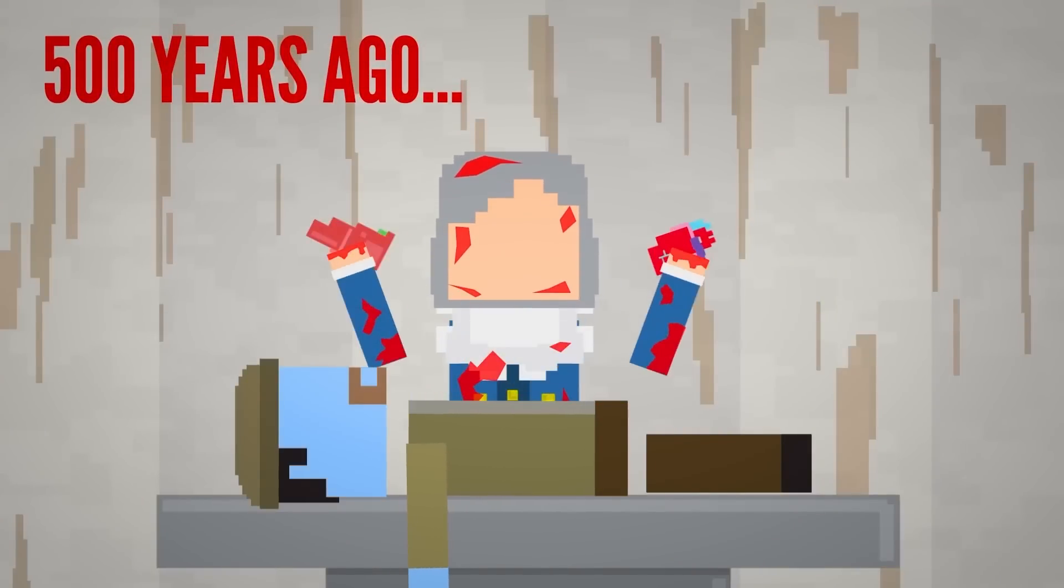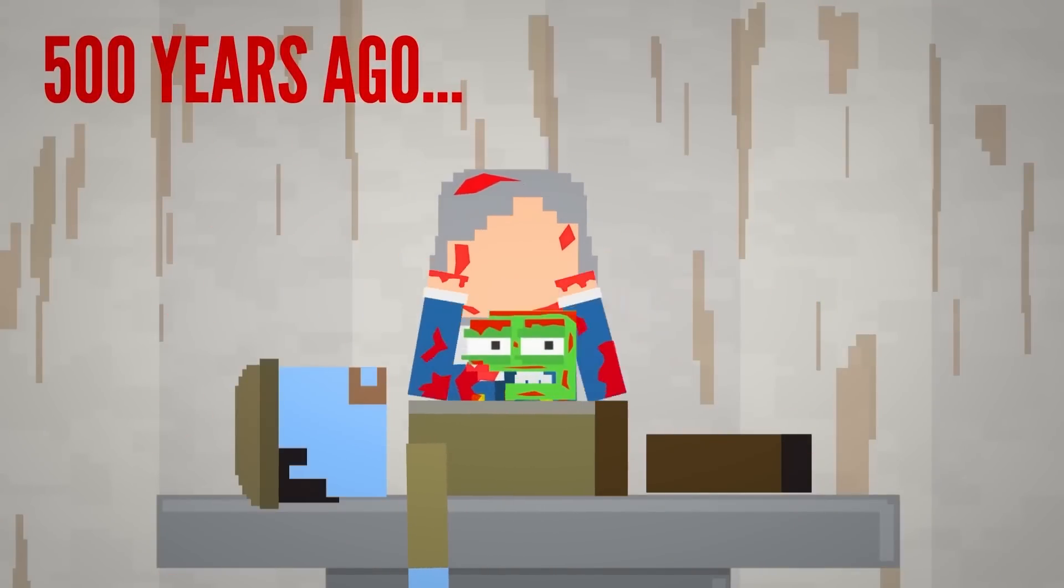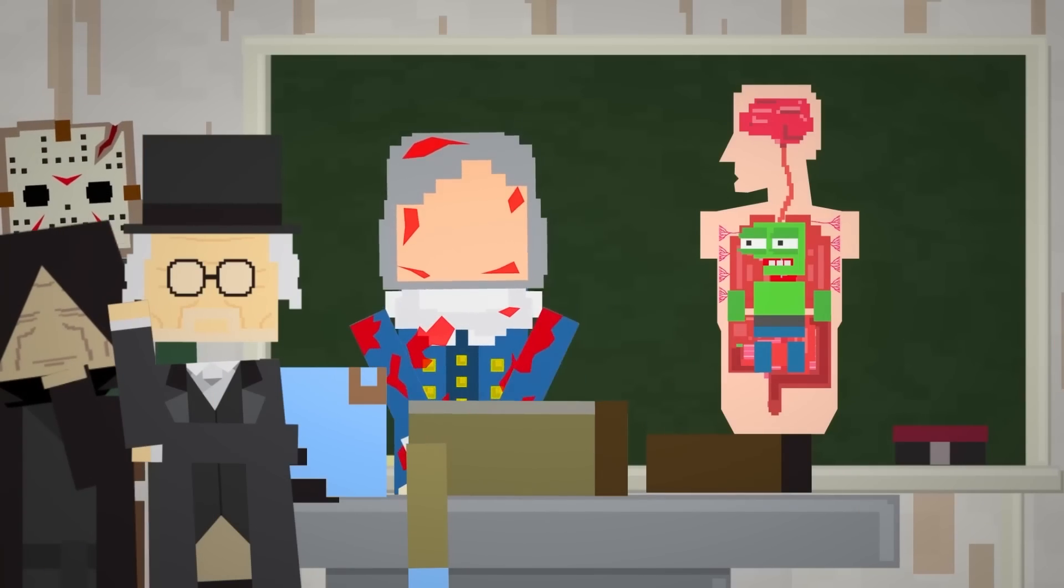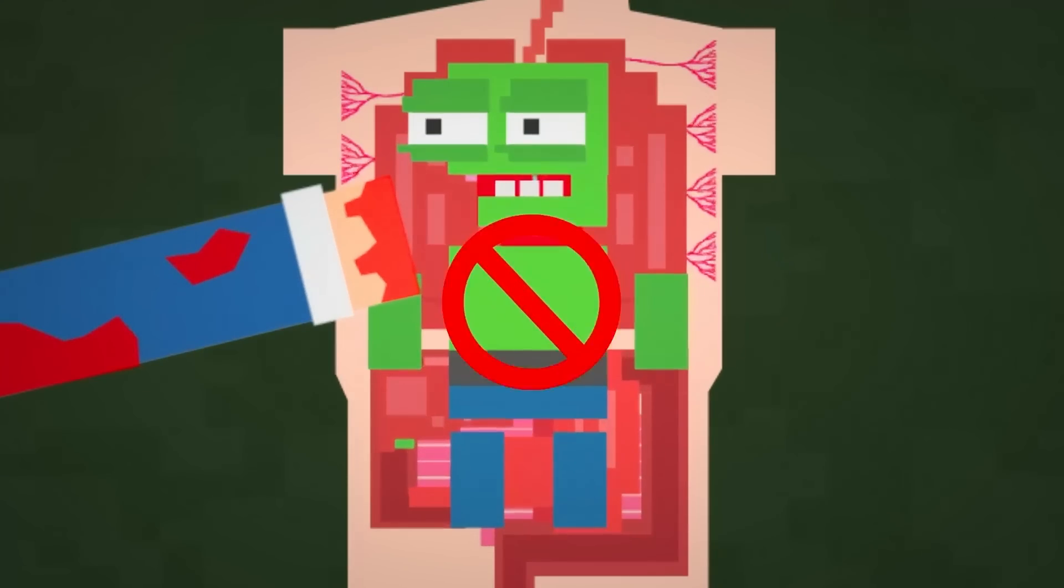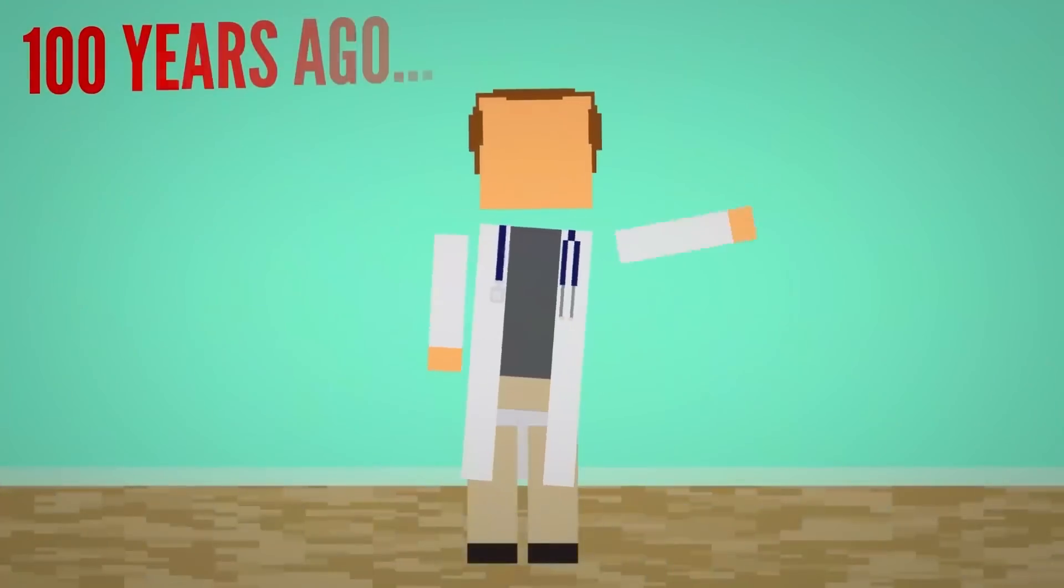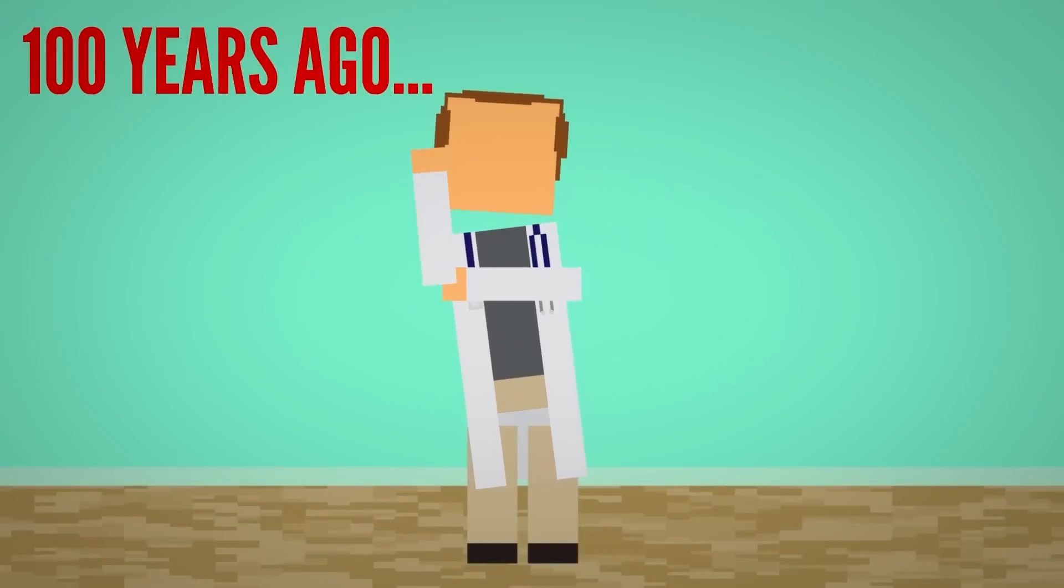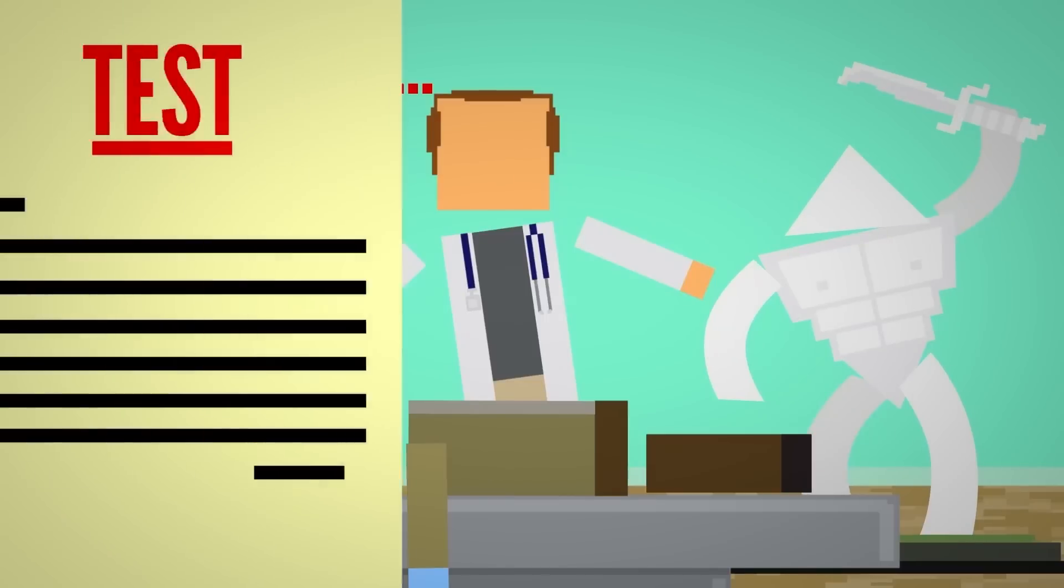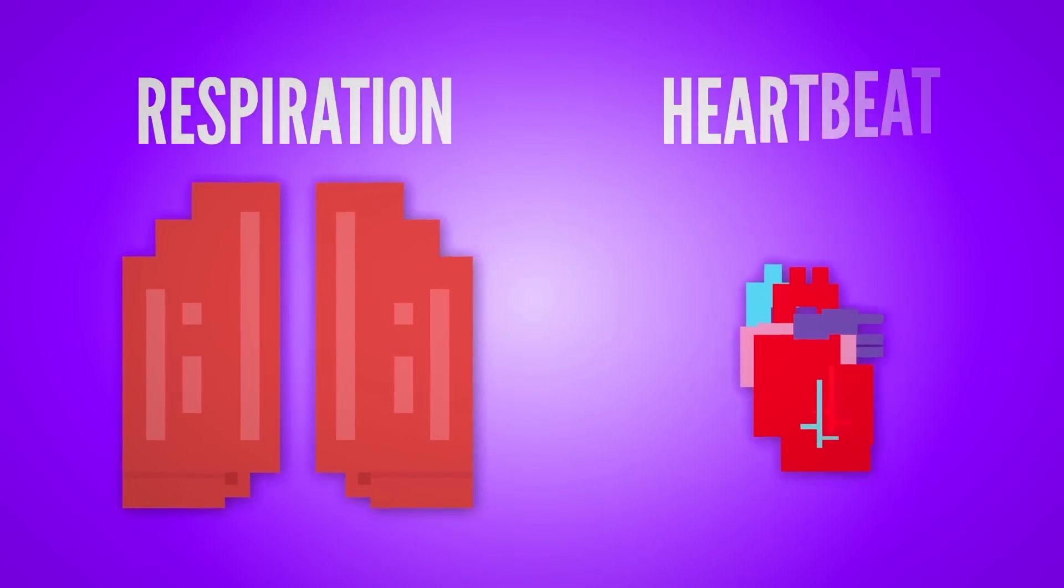About 500 years ago, physicians dissected human bodies and studied their anatomy. Their work led to a better understanding of the causes of death, how it was due to a malfunction within the body, rather than a curse from some higher power. But even a century ago, doctors were still struggling to determine if someone was dead or just in suspended animation. They developed all kinds of crazy tests to check for respiration and heartbeat.